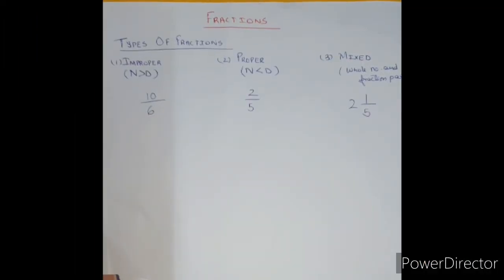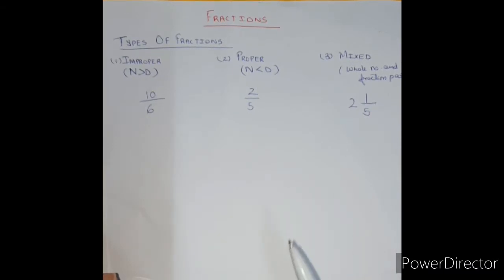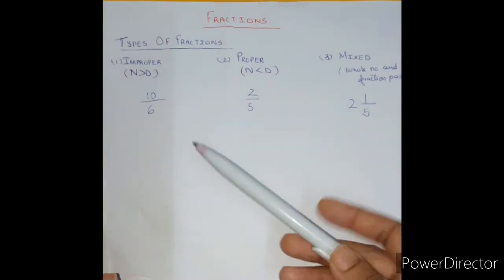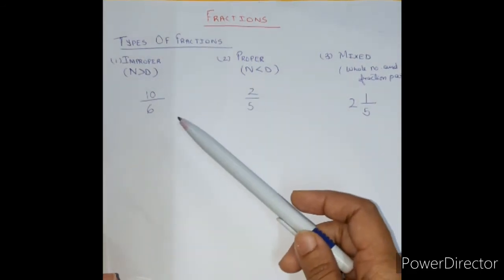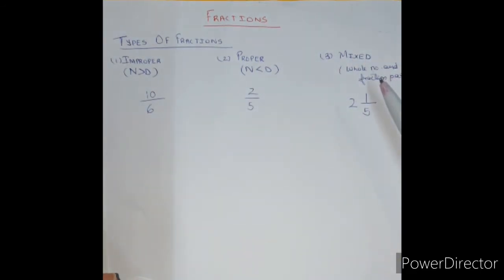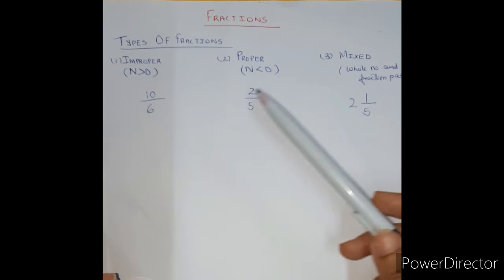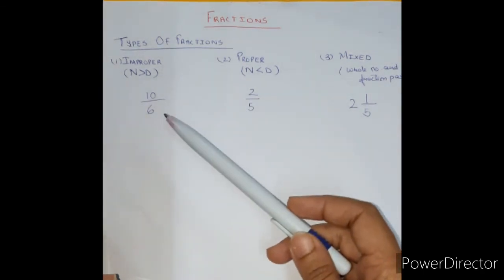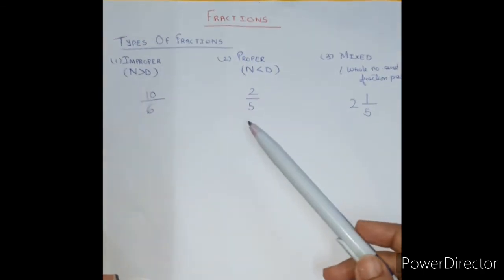Hello students, welcome to a chapter on fractions. We will learn about types of fractions today. There are three main types of fractions: improper fraction, proper fraction, and mixed fraction. Let us learn about the difference between improper and proper first.